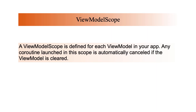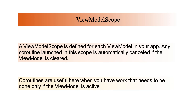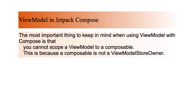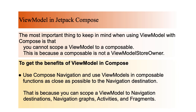A ViewModelScope is defined for each ViewModel in your application. Any coroutine launched in this scope is automatically cancelled if the ViewModel is cleared. Coroutines are useful here when you have work that needs to be done only if the ViewModel is active. When using ViewModel with Jetpack Compose, the most important thing to keep in mind is that you cannot scope a ViewModel to a composable, because a composable is not a ViewModelStoreOwner. To get the benefits of a ViewModel in Compose, use Compose Navigation or use viewModels() in a composable function as close as possible to the navigation destination, since you can scope a ViewModel to navigation destinations, navigation graphs, activities, and fragments.